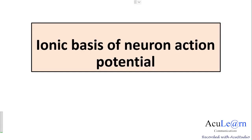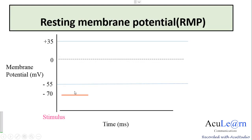Hello students. In this video we'll talk about the ionic basis of neuron action potential. The action potential is defined as the brief sequence of changes which occur in the resting membrane potential when stimulated by a threshold stimulus. We begin with the resting membrane potential, recorded as a straight baseline at minus 70 millivolts before the application of the stimulus. This is called the resting stage, which is the resting membrane potential before the action potential begins.